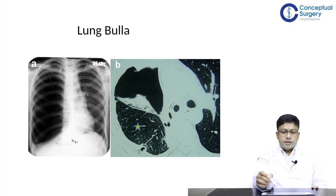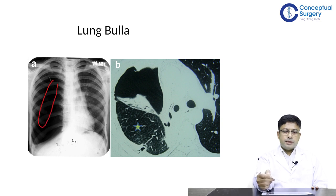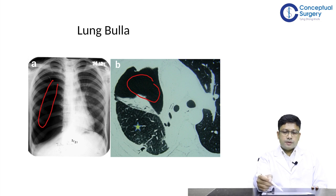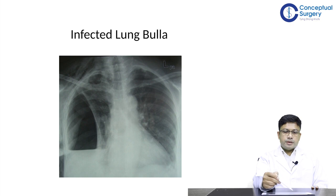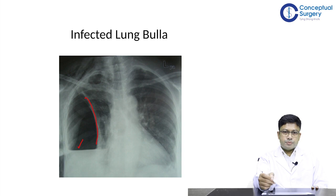If anyone is in doubt about the presence of pneumothorax, higher imaging studies should be carried out. For example, figure A shows a translucent area devoid of vascular markings, but a CT chest of the same patient revealed a huge bulla on the right side — in this case a chest tube is not indicated. If placed inadvertently into the bulla, it can lead to a bronchopleural fistula with continuous air leak. Another X-ray shows an air-fluid level on the right side — this is an infected lung bulla that does not require immediate chest tube insertion but requires CT evaluation and later definitive surgery like bullectomy.